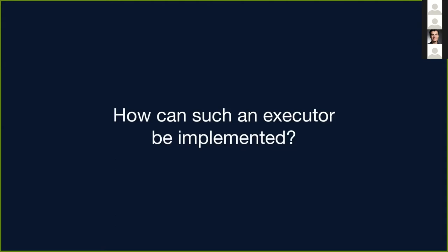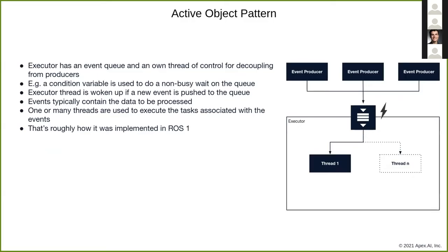So how can you implement such an executor? You can use an active object pattern, where you have an executor with an event queue. It has its own thread of control, so you can decouple from the event producers. You can use a condition variable to wait on new events arriving at the queue. Then you can take the event out of the queue, have one or multiple threads, and do the tasks related to these events.